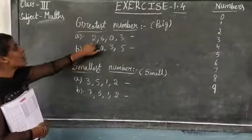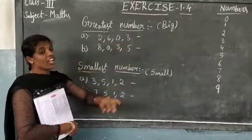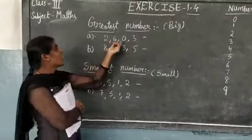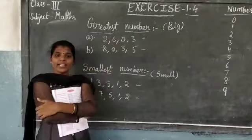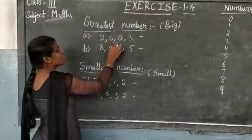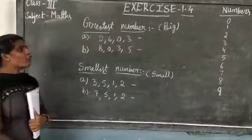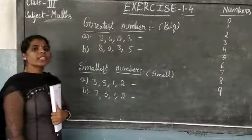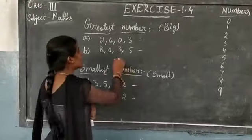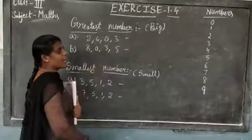First you read: 2, 6, 0, 3. Here, first you write the greatest number, means big number you should write. Ok children, which is the big number? 6, 2, 0, 3 — here, 4 digits. Which is the big number children? 6 is the big number.